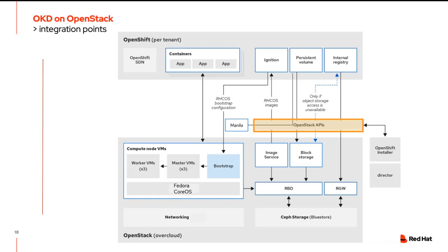To put OKD on OpenStack, we have to look at some key integration points. Central to all of that is the use of the OpenStack APIs — we never want to interact with our underlying infrastructure without going through those APIs, to ensure good control over the environment. We'll utilize different components: Glance for image storage, Cinder for block and disk storage, and object storage as well.